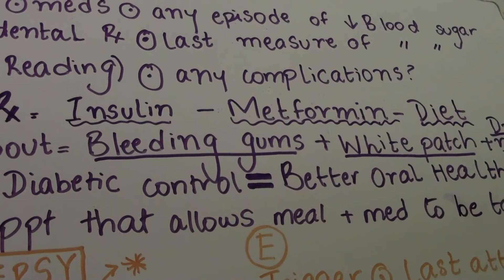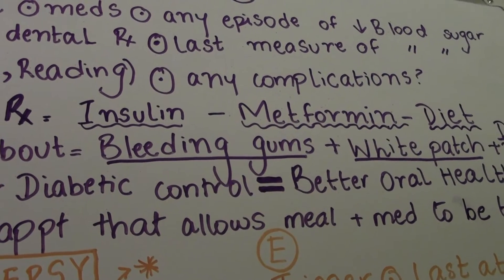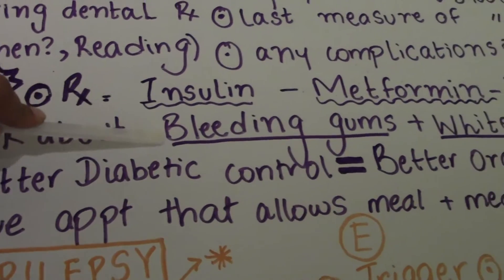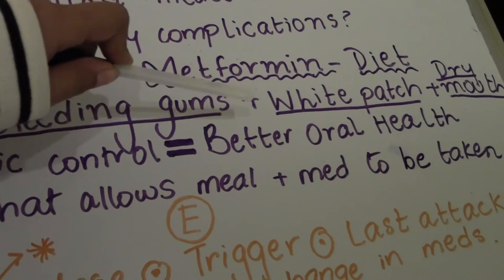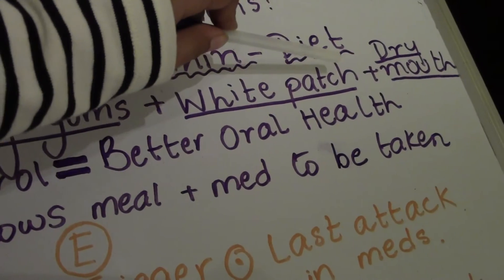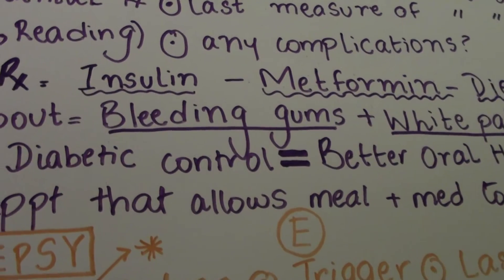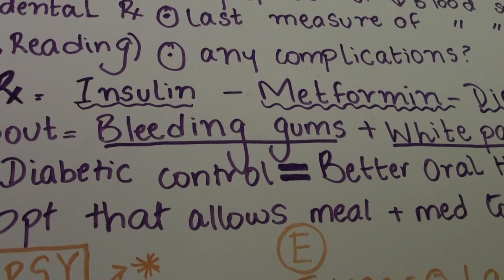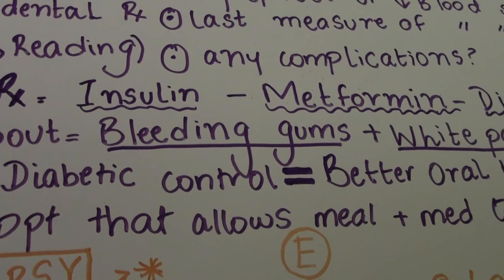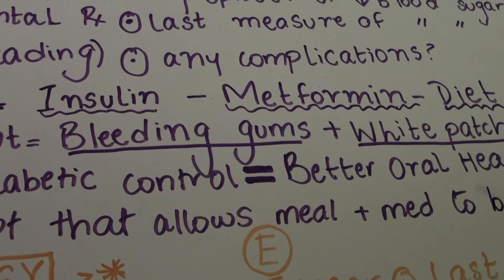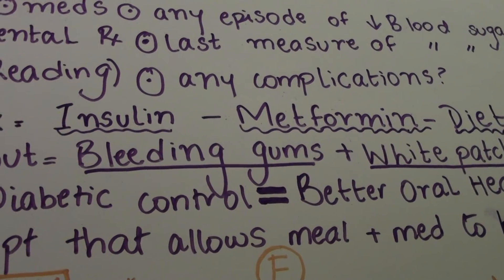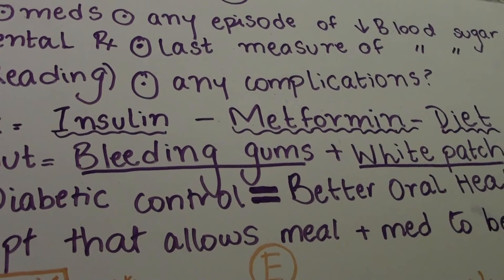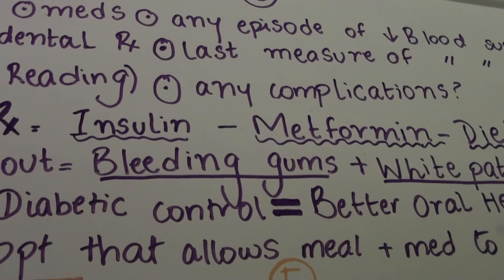We're going to ask the patient about any bleeding from their gums, if they've noticed any white patches in the mouth, or if their mouth has been feeling particularly dry. Bleeding gums occur because diabetic patients whose diabetes is not under control can develop gingivitis and periodontitis — not that they develop it because of the diabetes, but they're more prone to it. Diabetes will just worsen what's already there.